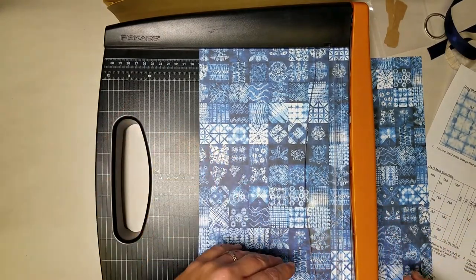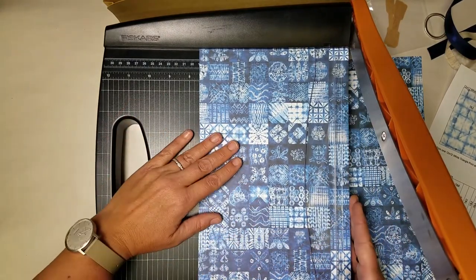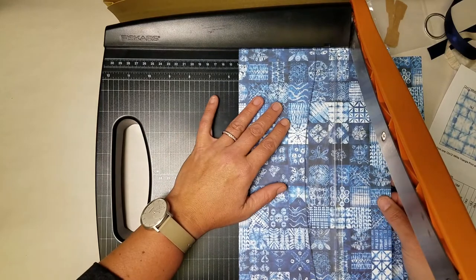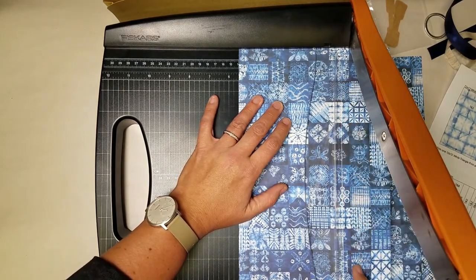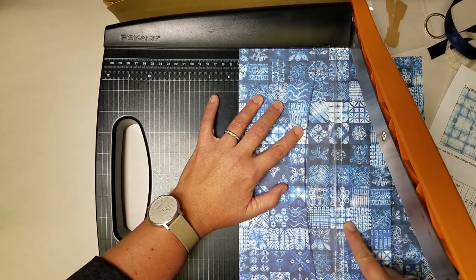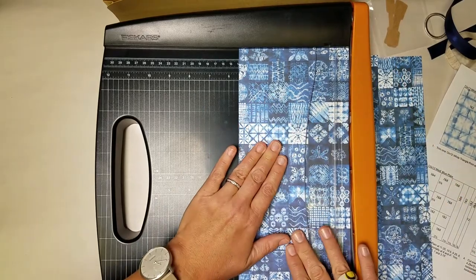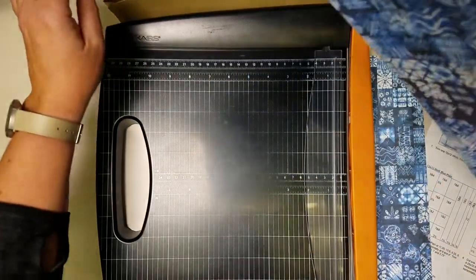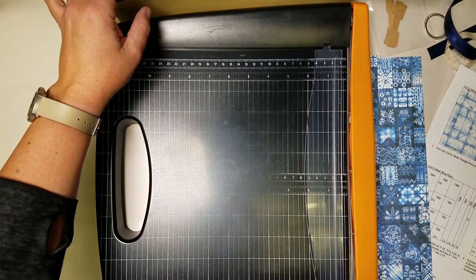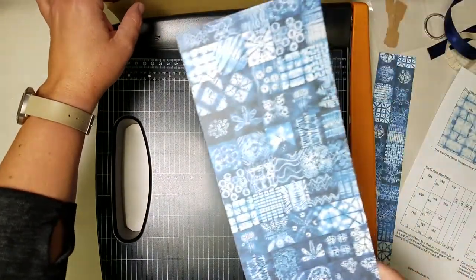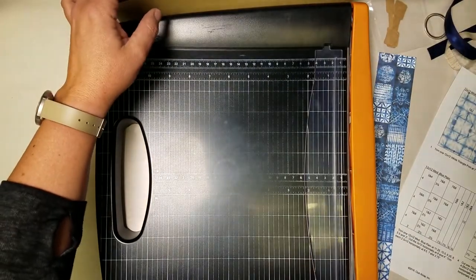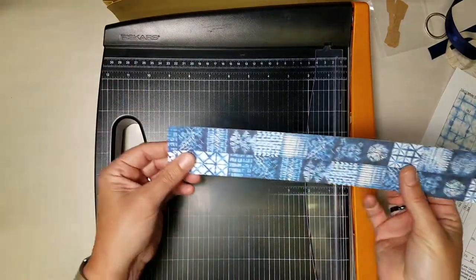Then I'm gonna slide this down to five and a half and once again that lands me right on the line between all the squares. So this large piece in the base of my trimmer is used in layouts seven and eight and then the other larger piece is also used in seven and eight that leaves me with this narrow piece.